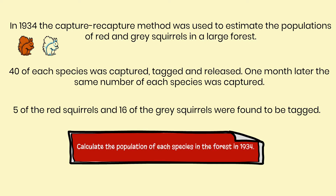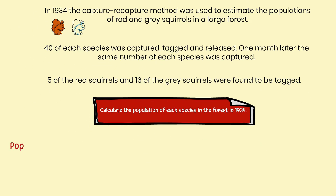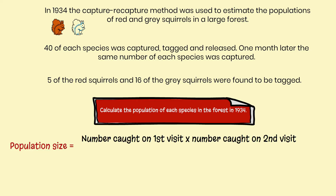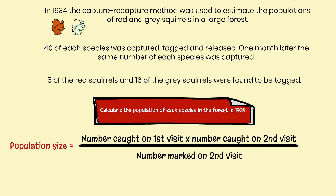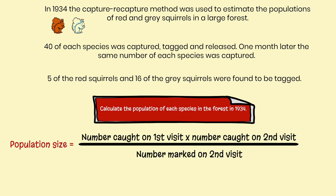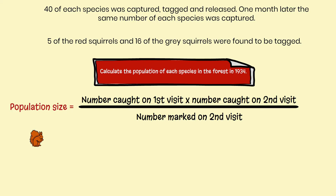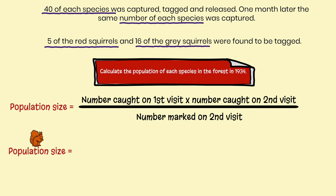Calculate the population of each of the species in the forest in 1934. You begin your answer by writing down the formula: Population size equals the number caught on the first visit multiplied by the number caught on the second visit, divided by the number marked on the second visit. Let's do the red squirrels population size first.